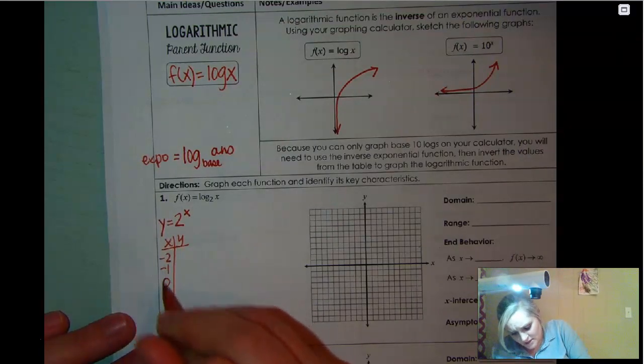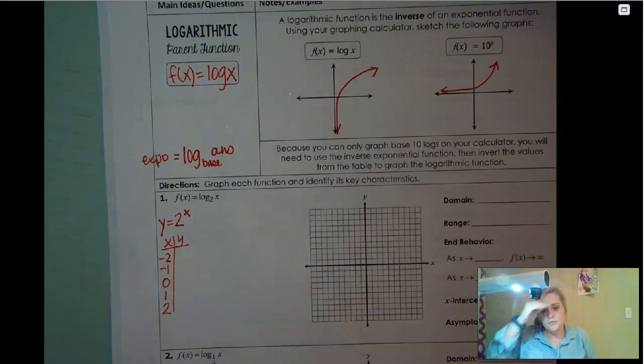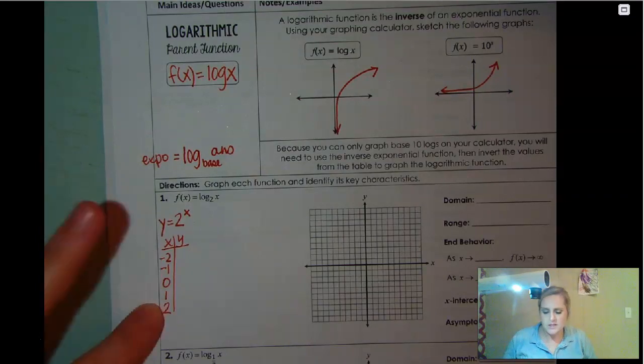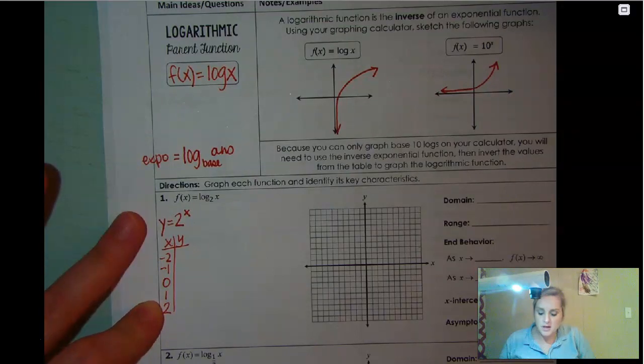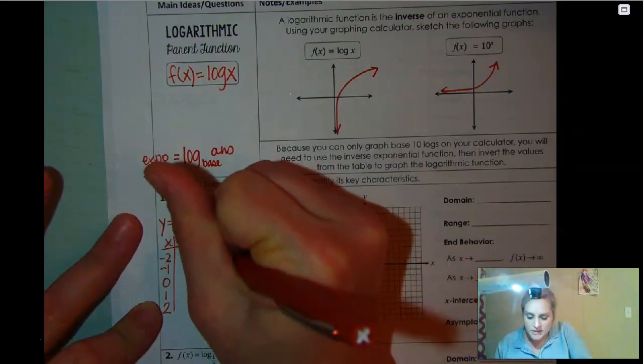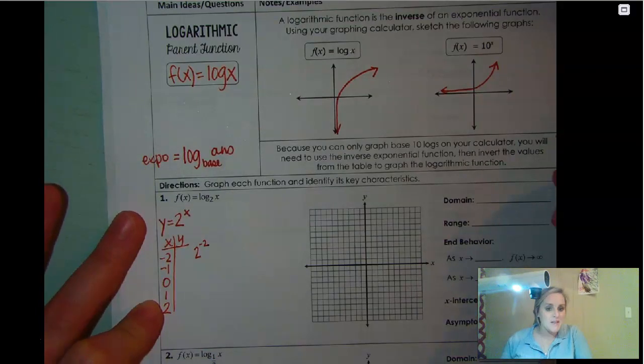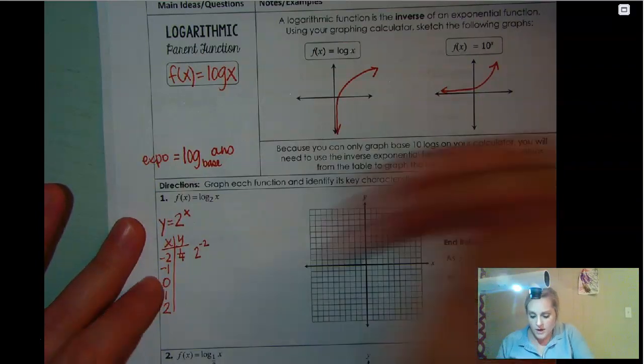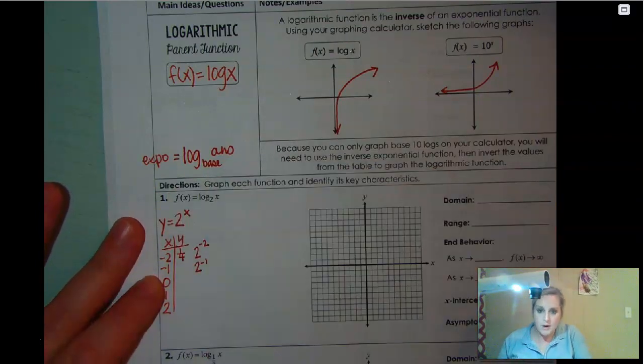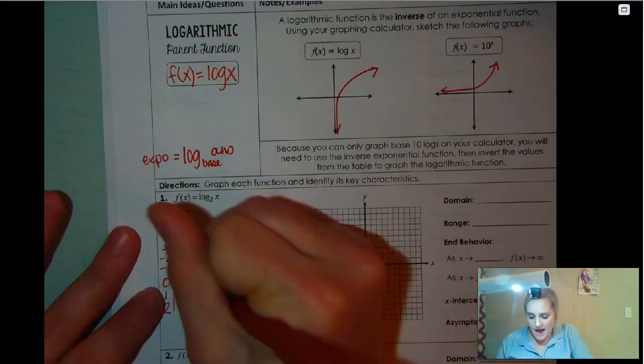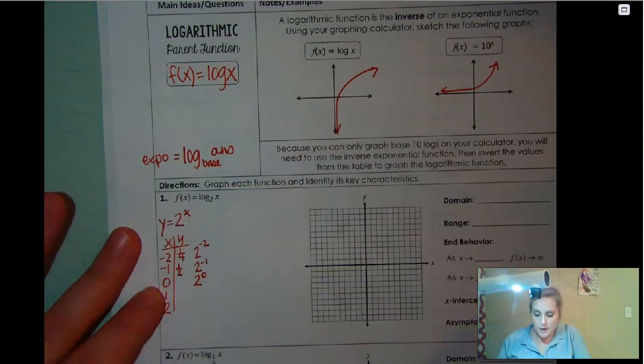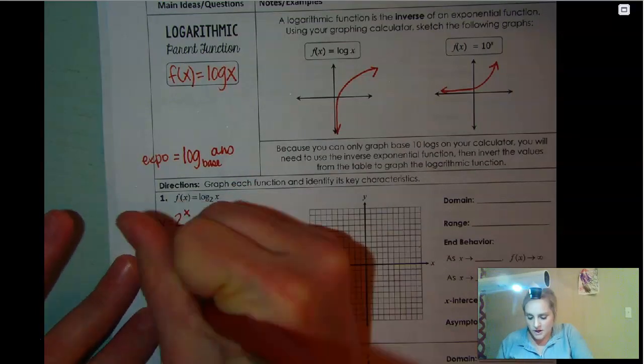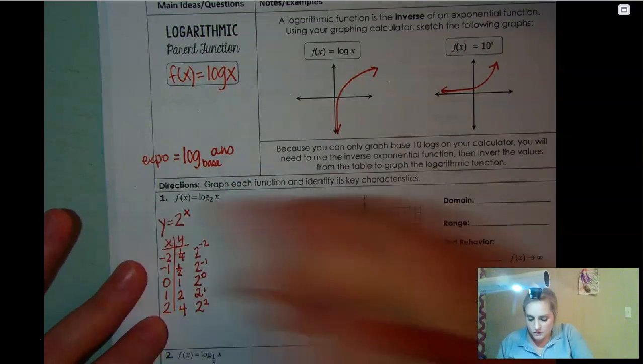But what we're going to do is we're going to take this and say, if two was the base and we were dealing with an exponential equation, we would have y equals 2 to the x power. We would make the table like normal: negative two, negative one, zero, one, and two. Then we would plug those in. Two to the negative two power makes it a fraction, so this is going to be one fourth. Two to the negative one is one half. Two to the zero power is one. Two to the first is two. Two to the second is four.